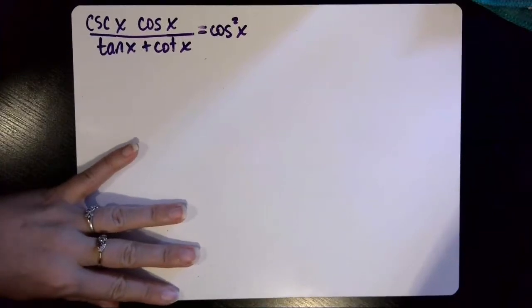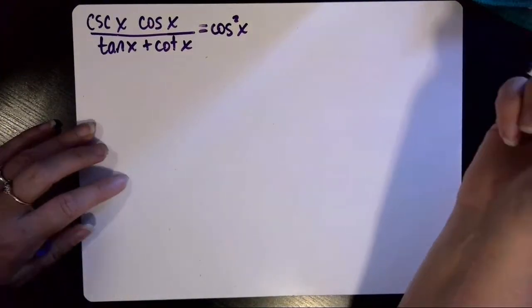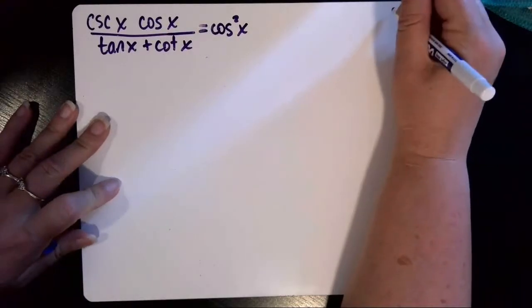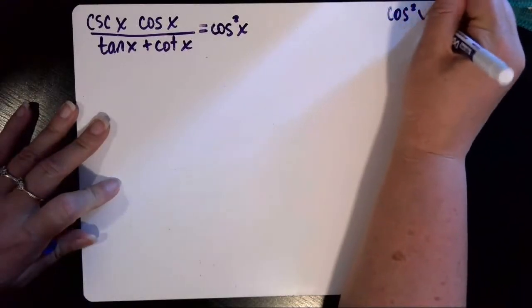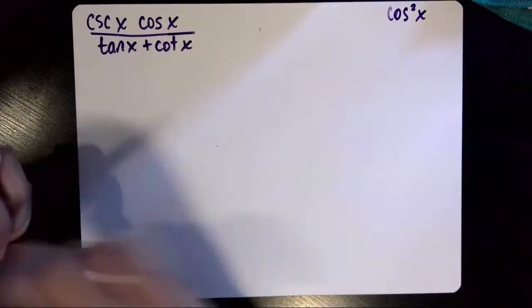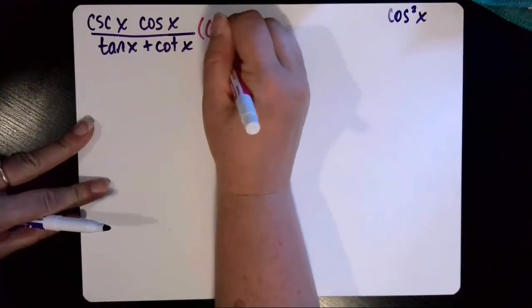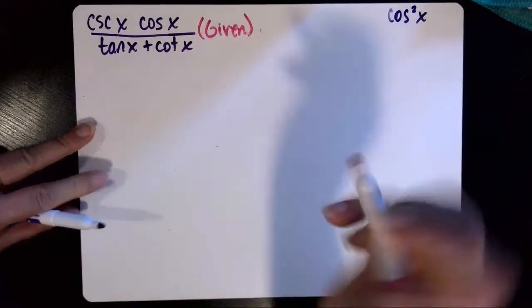And step number one in verifying trig identities is always to start with the more complicated side as your given information. So I'm just going to jot down, to give myself some room, I'm going to jot down cosine squared x on the corner here. That's where I'm headed, and then I'll just put that this first step is my given.